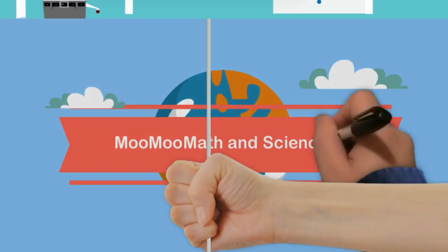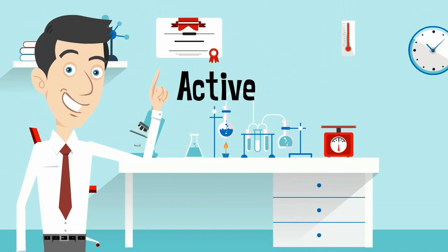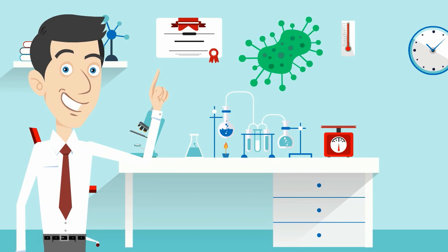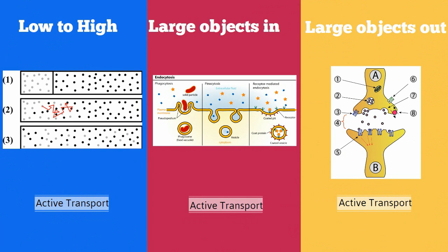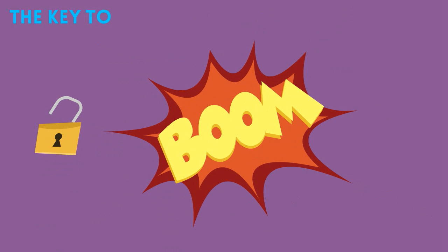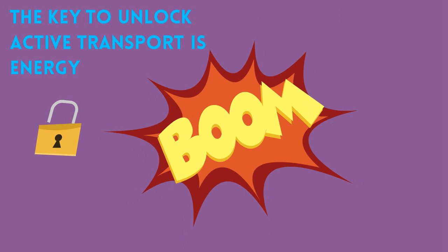Welcome to MooMooMath and Science. In this video I'd like to talk about active transport. In order to stay alive, cells need to move objects into and out. Sometimes the objects either need to go up the concentration gradient or are too large to pass through the membrane. In these instances, active transportation is used. Active transportation requires energy because moving objects from low concentration to high, or up the concentration gradient, or larger objects into and out, requires energy.